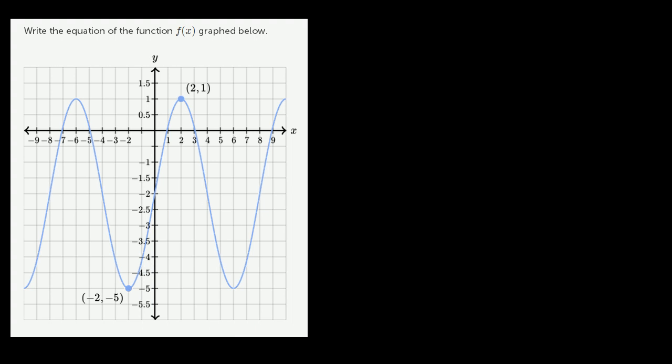We can see that right over here. The midline is halfway between the maximum point and the minimum point. The maximum point right over here hits a value of y equals 1. At the minimum point, it hits a value of y is equal to negative 5. So halfway between those, the average of 1 and negative 5, 1 plus negative 5 is negative 4 divided by 2 is negative 2.